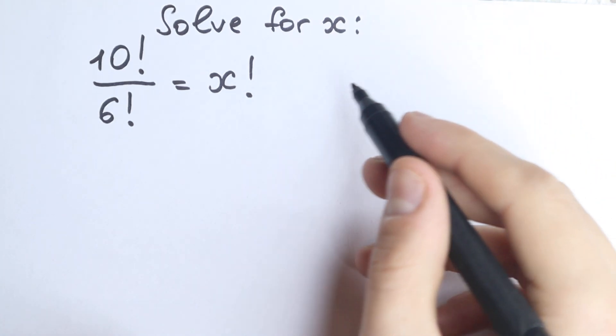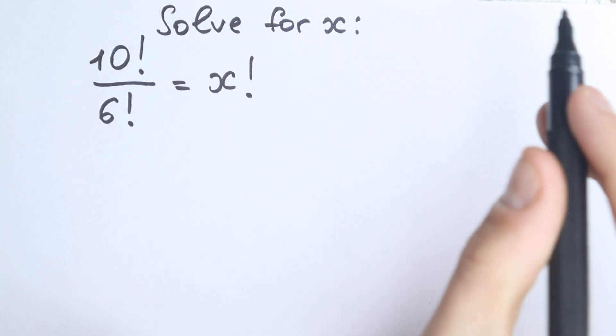So 10 factorial over 6 factorial equals x factorial. Very tricky and relaxing algebra problem in the same way.